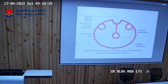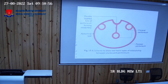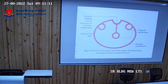Because the parietal peritoneum is loosely attached to the abdominal pelvic wall, we can easily strip it off. Opposite to this, the visceral peritoneum is closely adherent to the viscera and cannot be easily stripped off from the viscera.